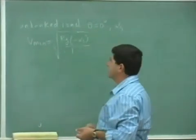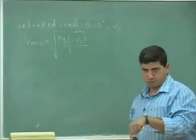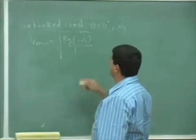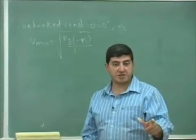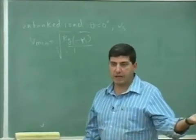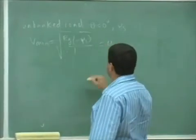So this is telling us for unbanked road with coefficient of static friction μ_s, the minimum velocity is square root of rg negative μ_s, which means it's undefined. Which means on an unbanked road you can stop and nothing happens. You can go as slow as you want.